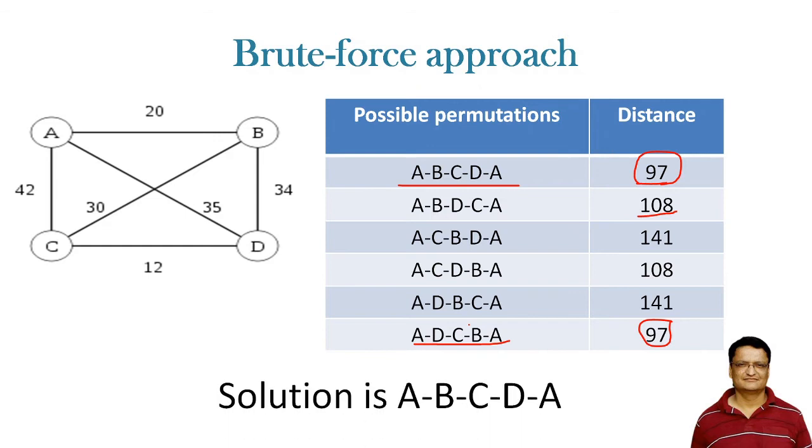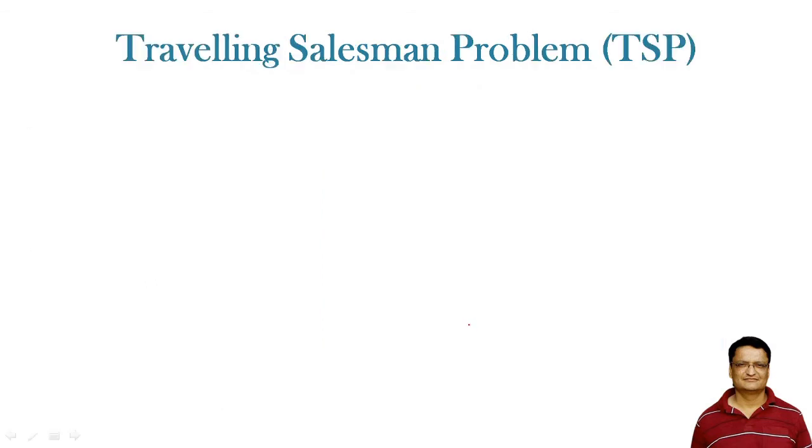So the solution is A, B, C, D, A. Now while calculating all this, we have taken the scientific approach and calculated all the values and came to the solution. But it is not always possible to take this kind of approach because for four cities, the number of possibilities were six.